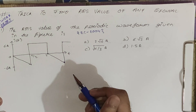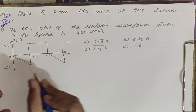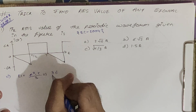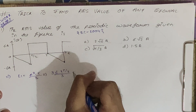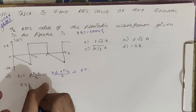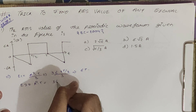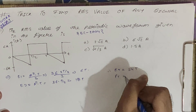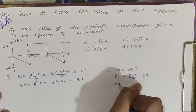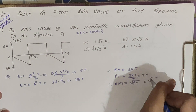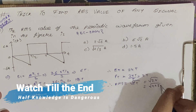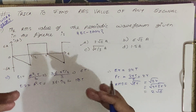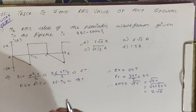We have to find the RMS value of this signal. First, take a look at how I solve this problem, and then I will show you the trick. The answer is √24. If you split it, it will be 4×3×2, which is nothing but 2√6. So the answer is 2√6, that is option A.